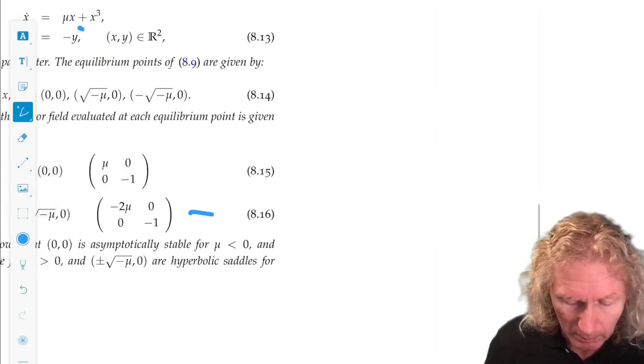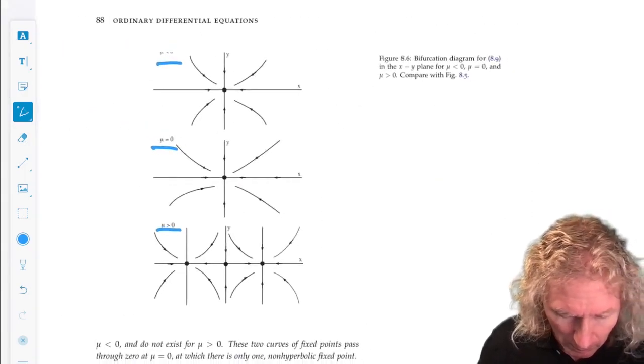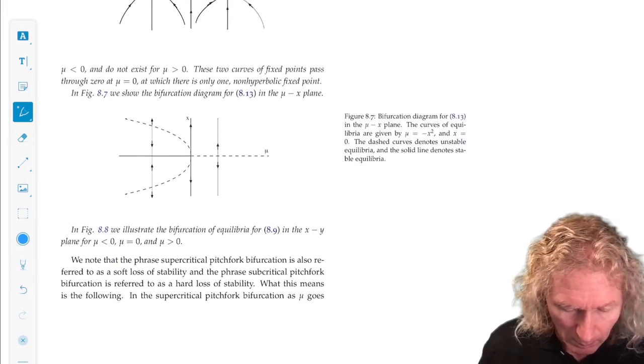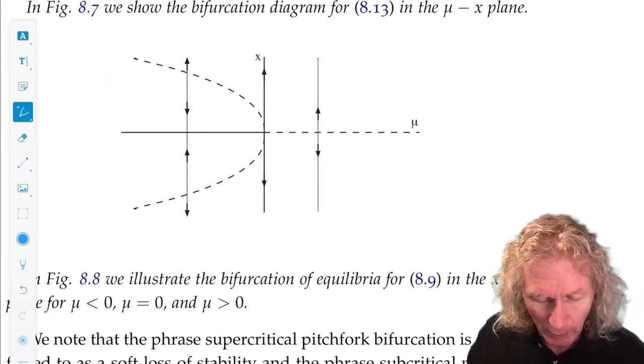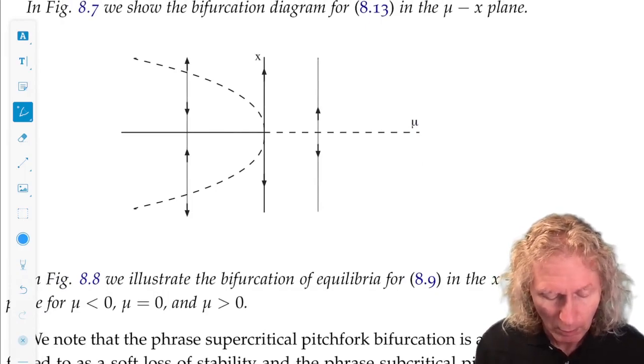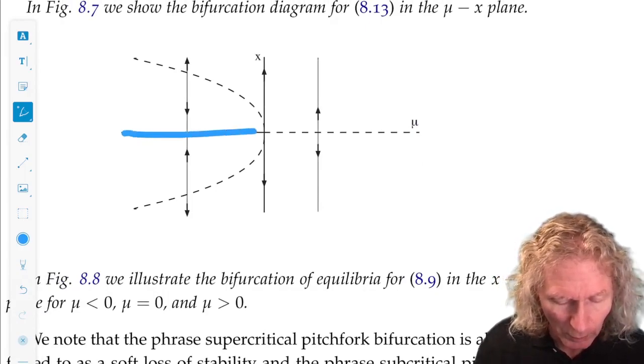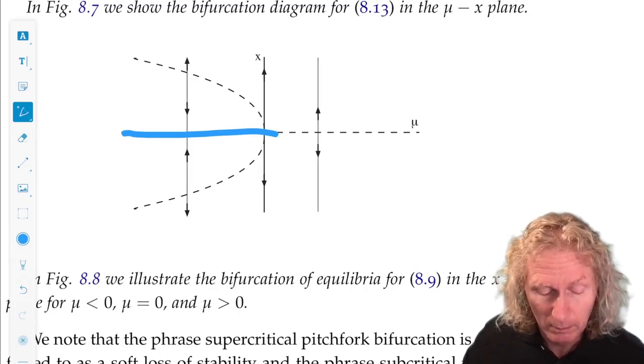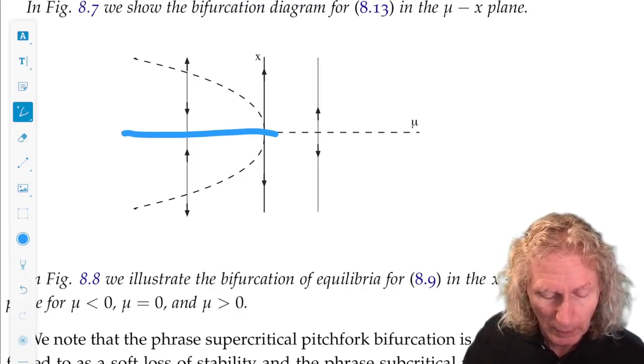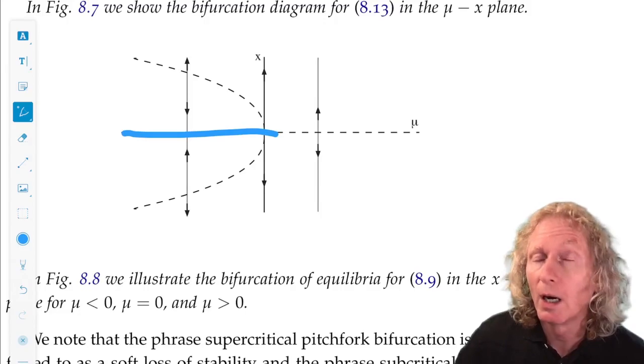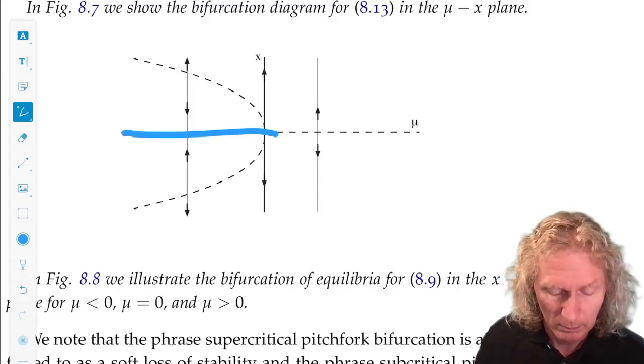If we plot the bifurcation diagram in the μ-x plane, what we see here is the origin is stable for μ negative, and it's surrounded by two unstable equilibria.